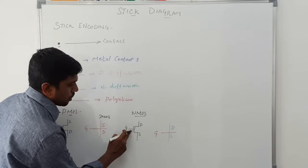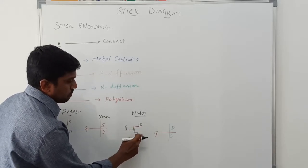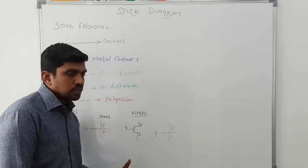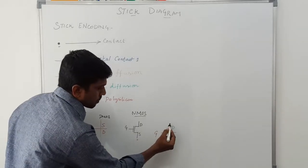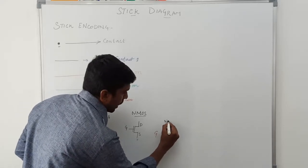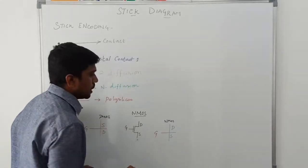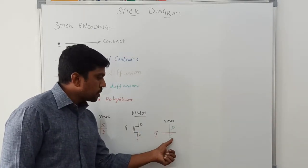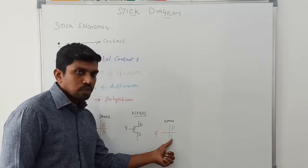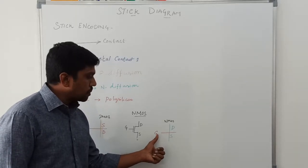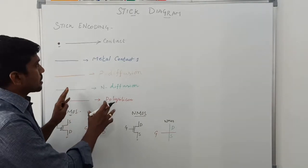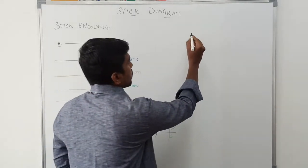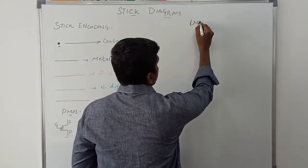For NMOS, this is the symbol without a bubble, using gate, drain, and source terminals. This static CMOS circuit is converted into a stick diagram using a green line, which represents the NMOS transistor. The top of the line represents drain, the bottom represents source, and the middle of the line represents the gate terminal. This is the simple procedure for the stick diagram.